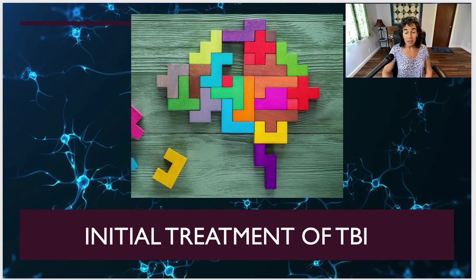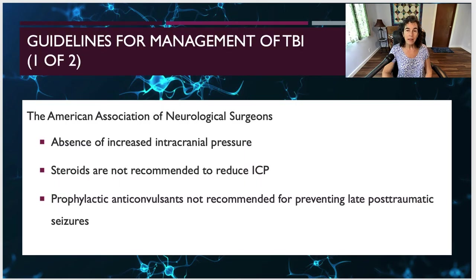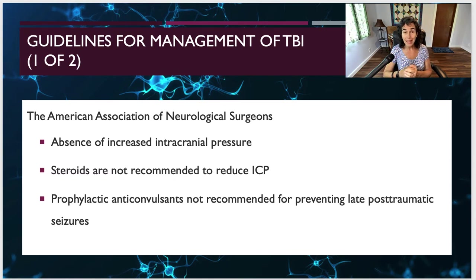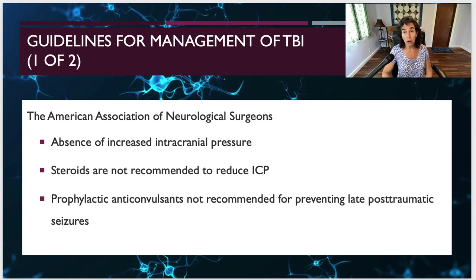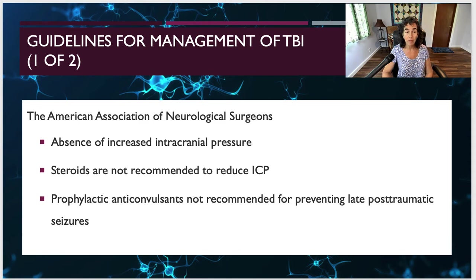Now let's look at the initial treatment of traumatic brain injury. When we think about TBI, we initially think about management. The American Association of Neurological Surgeons has come up with a set of protocols. We want to make sure that intracranial pressure is decreased if it has been increased. Steroids are not recommended for reducing intracranial pressure, although steroids are used for a lot of other kinds of inflammation. Prophylactic anticonvulsants are also not recommended for preventing late post-traumatic seizures.